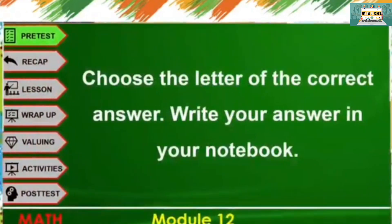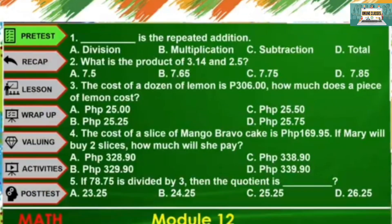Choose the letter of the correct answer. Write your answer in your notebook. Number 1: Blank is the repeated addition. A. Division, B. Multiplication, C. Subtraction, D. Total.